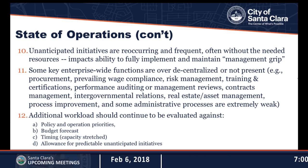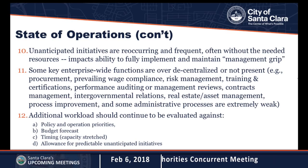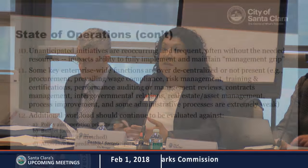Looking under the hood in greater detail: in some key enterprise-wide functions, we are either over-decentralized or they're just not present. I am concerned about our procurement processes — we have a key vacancy since our manager recently retired, and many parts of the organization are conducting procurement processes independently. If we were more centralized, we might get better economies of scale, more efficient pricing, and better risk management. This is probably one of the highest priorities for process improvement in this organization. Prevailing wage compliance and minimum wage — we have been under-resourced in managing these policies, and that has led to mistakes that we've had to go back and correct.